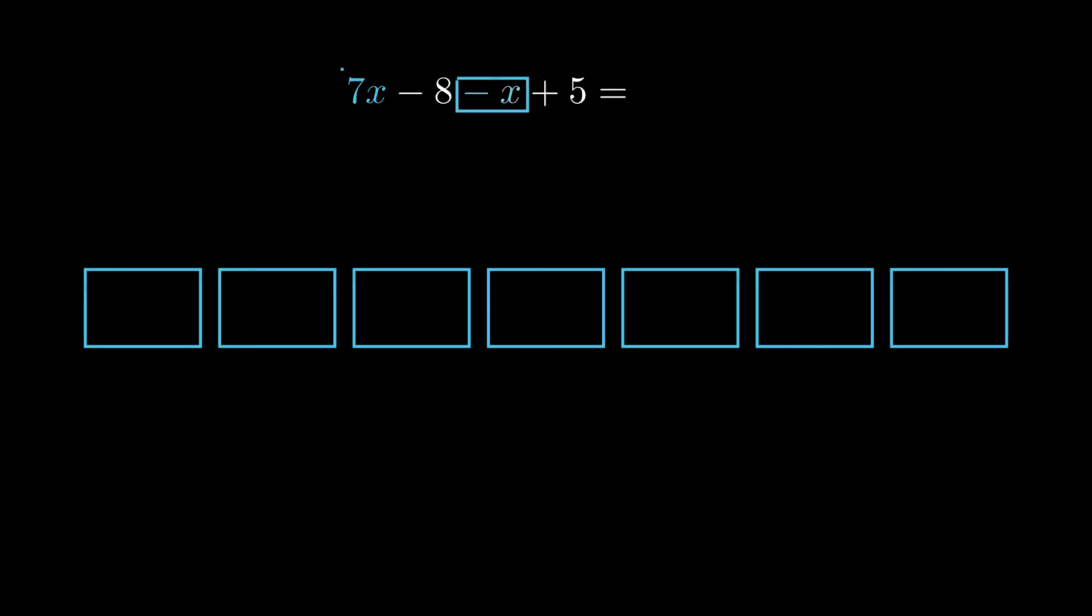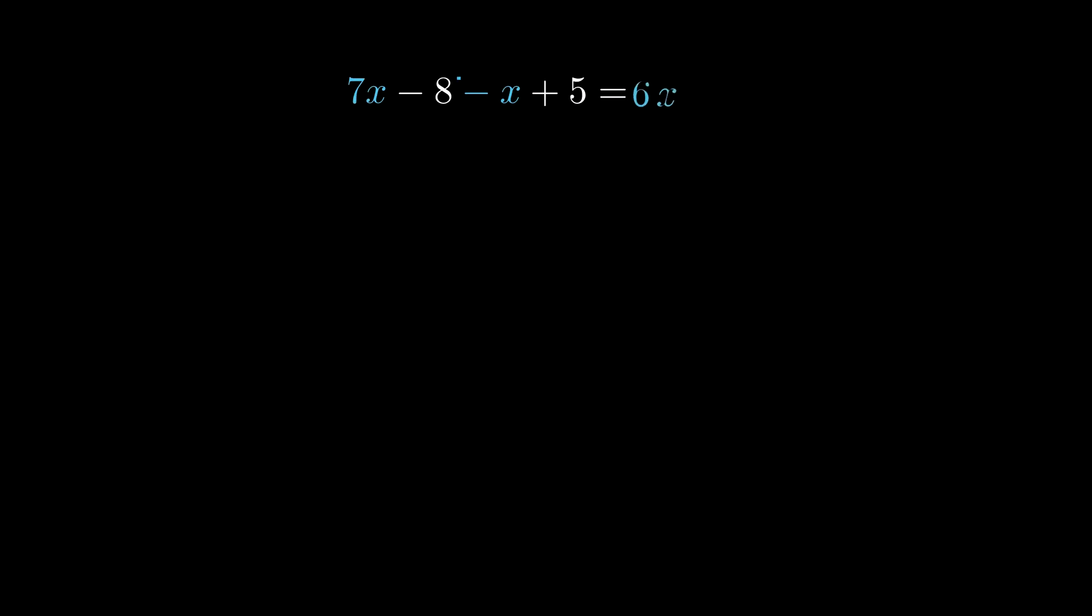So it might be easiest to scan across and see if we can find any other x guy to deal with first. So we see there's a minus x here. Now remember what I've said before, where each plus or minus sign applies only to the thing directly after it. So the minus here hits the x, and only the x. Now x with no number just means a single box. So that means we need to take away one of these boxes, and that leaves us with only 6 boxes remaining. So it's going to be 6x.